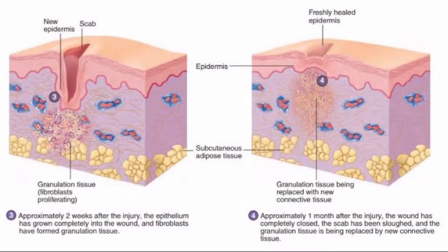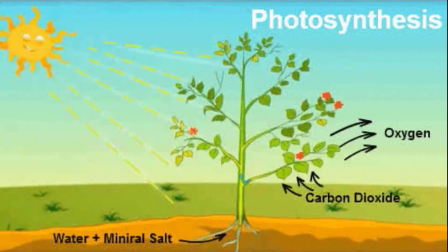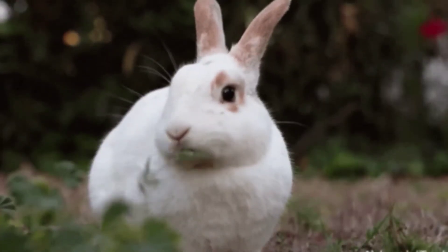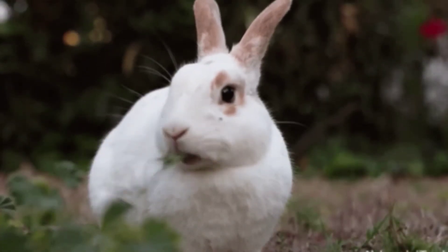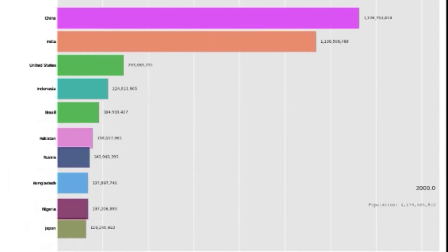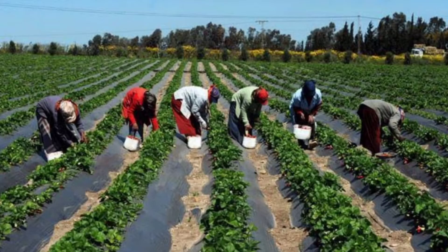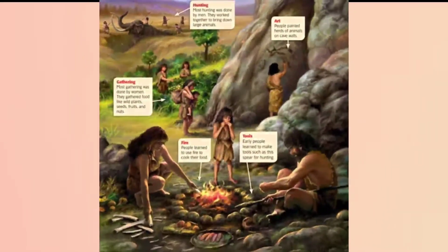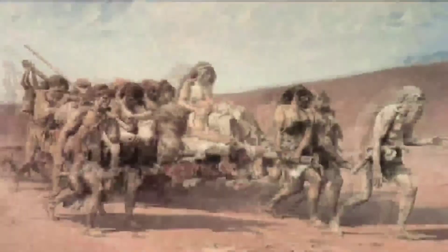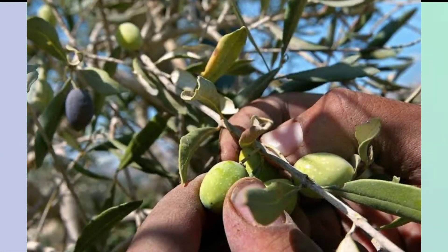Food is also needed for the repair of damaged tissues. Plants can make their own food, but animals, including us, are dependent on plants for their food. The tremendous increase in human population has increased the demand for food production and the need for better agricultural activities.